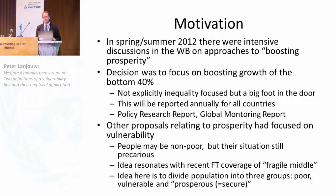What I wanted to discuss today are some of the other ideas circulating before we converged on the bottom 40% definition. One area we thought about a lot was linking shared prosperity to notions of vulnerability — the idea being that a society comprises the poor, the vulnerable, and the secure, and boosting shared prosperity could mean increasing the share that is neither poor nor vulnerable.